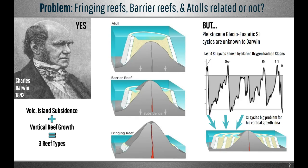In 1842, Charles Darwin proposed that there was an evolutionary sequence between fringing reefs, barrier reefs, and atolls — the three main reef types. He thought that fringing reefs grew vertically into barrier reefs and then into atolls as the volcanic islands subsided, and this led him to suggest that all barrier reefs and atolls must be developed in areas undergoing subsidence.